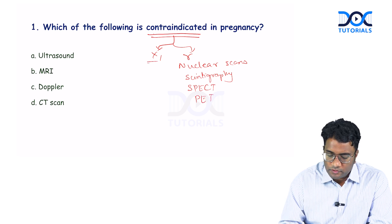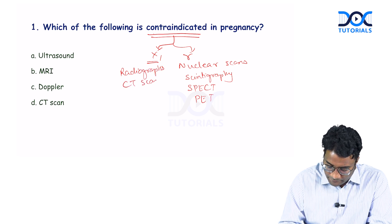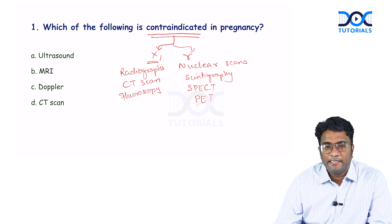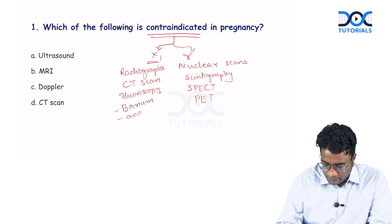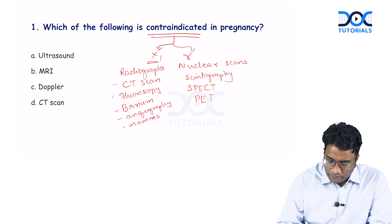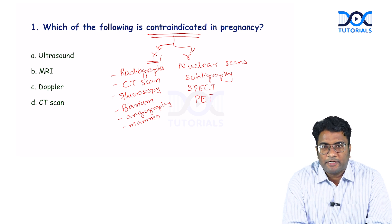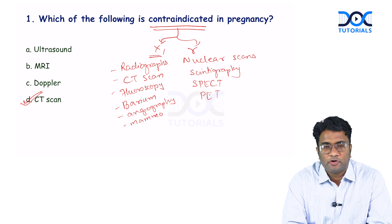Investigations using X-rays include radiographs, CT scans (which are slices of X-ray), fluoroscopy (video of X-rays), contrast-based procedures like barium studies, angiography, and mammography. All of these ionizing modalities are contraindicated in pregnancy. Among the given options, the answer is CT scan.